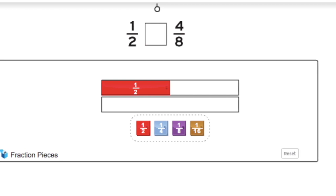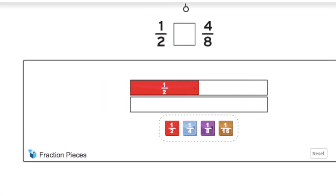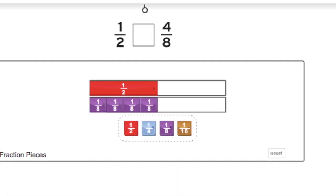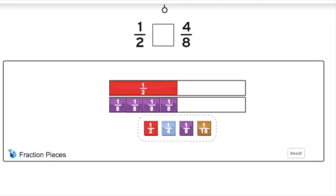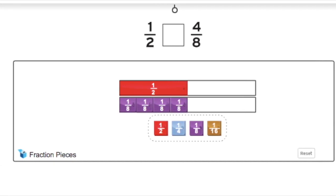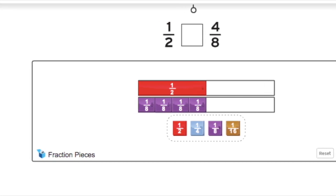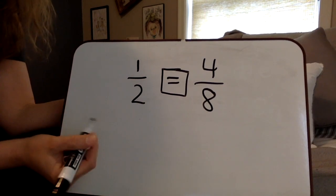Take 1/2 and 4/8. I can begin in my model by showing 1/2. I can then continue my model by showing the four 1/8 pieces that make 4/8. From there I can see that these two fractions are in fact equivalent—they have the same value. So we just proved using our model that 1/2 and 4/8 are equivalent.